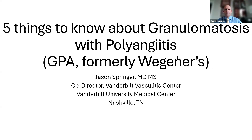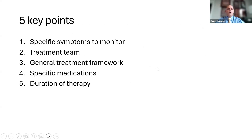I'm going to talk about some of the things that I think are important from a patient standpoint to know in terms of granulomatosis with polyangiitis, or GPA. Remember, this used to be called Wegener's granulomatosis, but the name has changed to GPA. Some of the things we will be talking about are symptoms to monitor for, the treatment team, a general framework on how we approach treatment, specific medications we use, and duration of therapy.